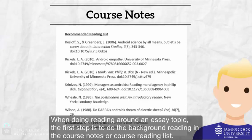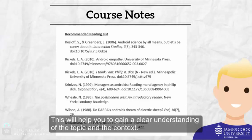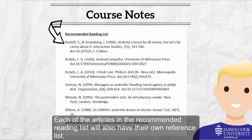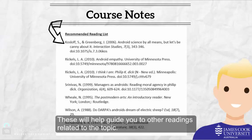When doing reading around an essay topic, the first step is to do the background reading in the course notes or course reading list. This will help you to gain a clear understanding of the topic and the context. Each of the articles in the recommended reading list will also have their own reference list. These will help guide you to other readings related to the topic.